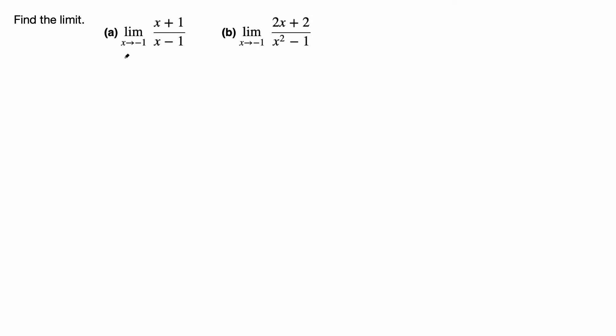Let's see if we simply plug in a negative 1 for x: negative 1 plus 1, that's 0, over negative 1 minus 1, that's negative 2. Okay, that's good. 0 over a number is just 0, so the limit is 0.